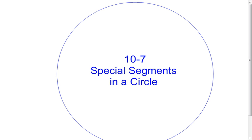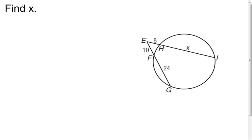In this video, I'm going to take a look at three examples that deal with segments in circles, dealing with the lengths of those segments. My first example, I want to calculate the value of x. I like to go back to my circle book, find a picture that looks like this, and then use the formula that's there.